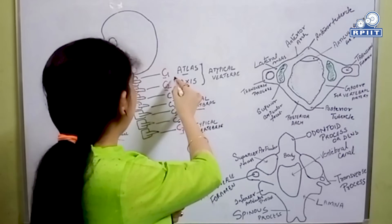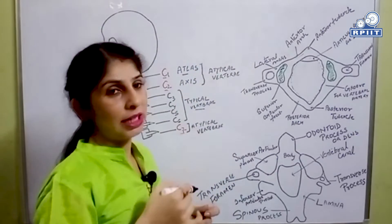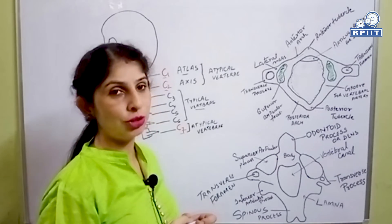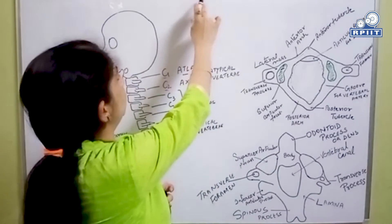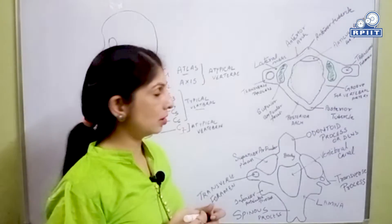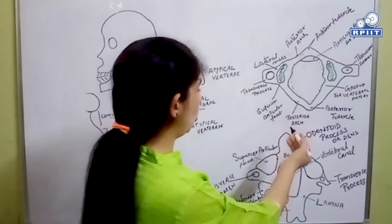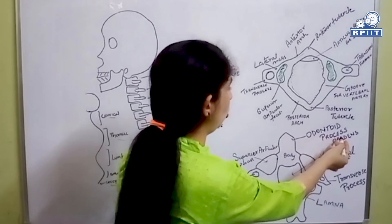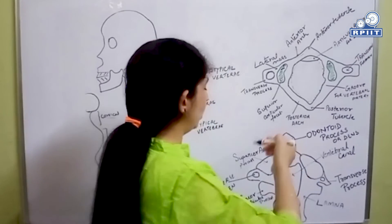In this video, we will discuss the features of the C2 vertebra, that is, axis. The axis is identified by the presence of the odontoid process or dens from the body, which is a tooth-like projection projecting upward from the body of axis.